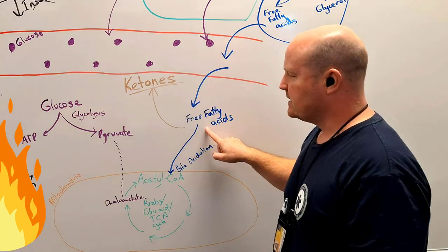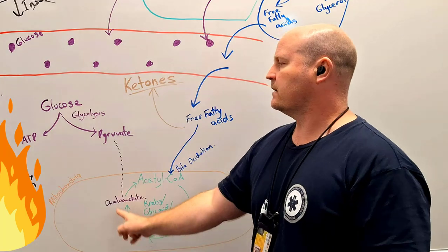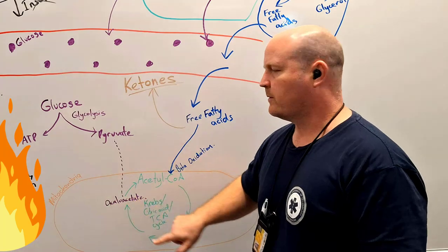For them to get fully broken down, we need them to enter the Krebs cycle, and as part of the process of breaking them down, we need oxaloacetate.